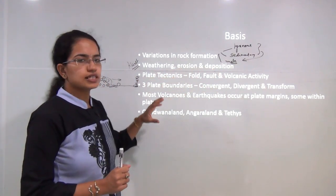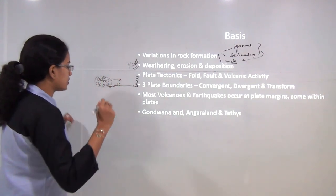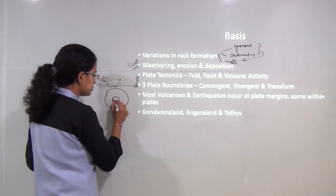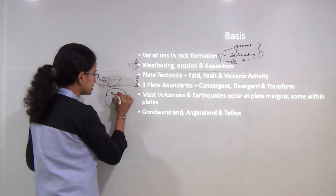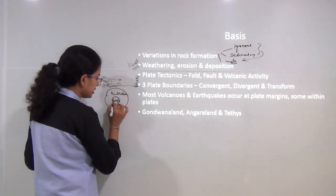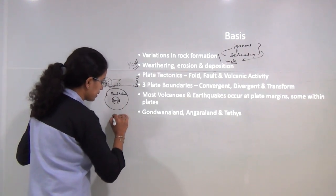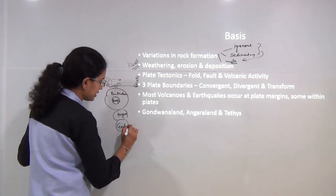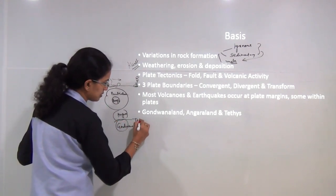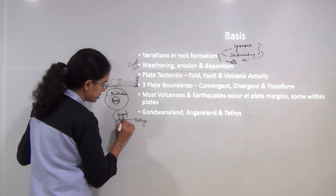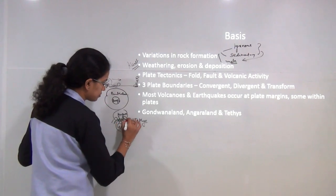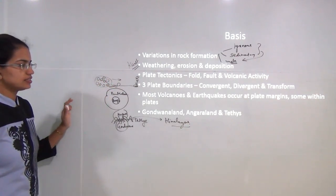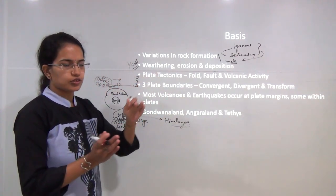There are certain phenomena like plate tectonics. Previously it was believed that there was a single landmass known as Pangaea, lying within Panthalassa — the ocean surrounding it. Slowly Pangaea started to divide, with the northern part as Angara Land and the southern region as Gondwana Land. The region between the two was known as the Tethys Sea, which with gradual depositions from both sides evolved into young fold mountains — the present-day Himalayas.